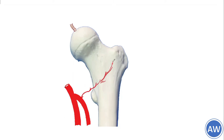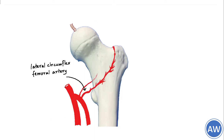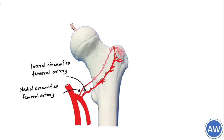The lateral circumflex femoral artery and the medial circumflex femoral arteries are branches of this profunda femoris artery, and they form an arterial arcade nearly encircling the upper end of the femur, as you can see in that picture.